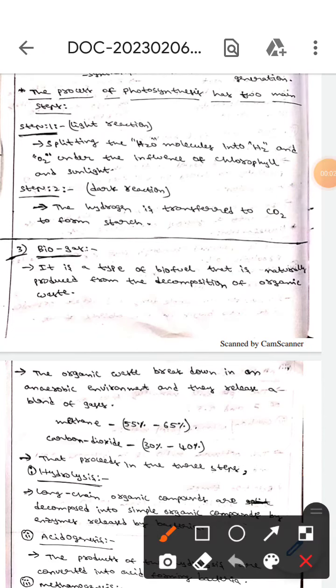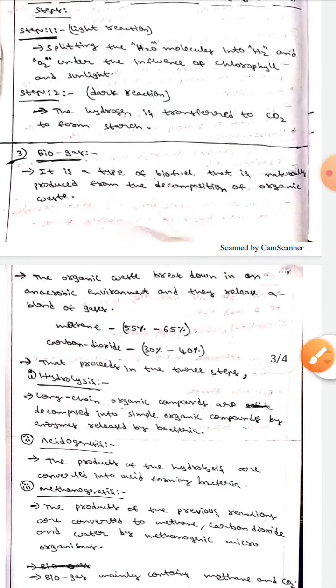Hello guys, I hope you are all fine. Today we are here to discuss about biogas production. It is a type of biofuel that is naturally produced from the decomposition of organic waste.